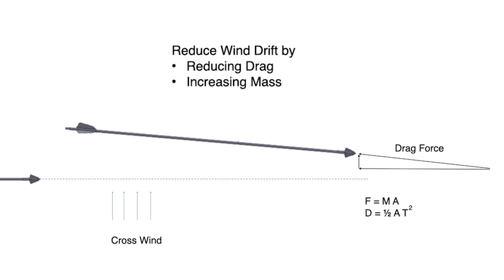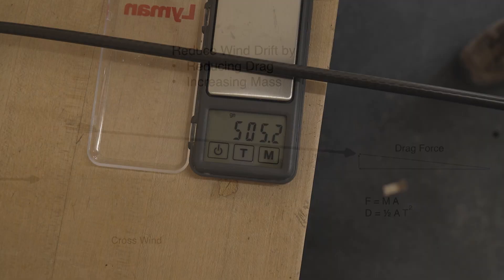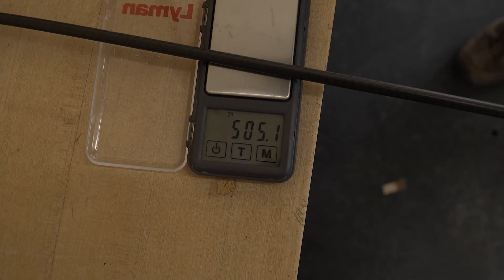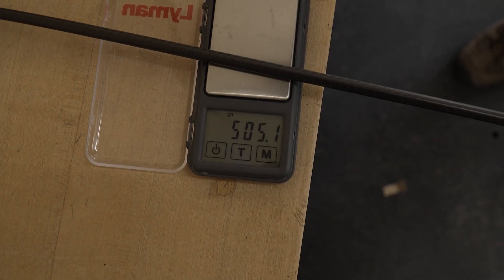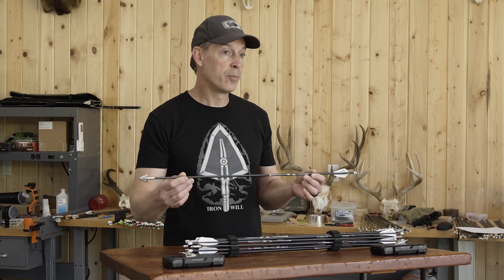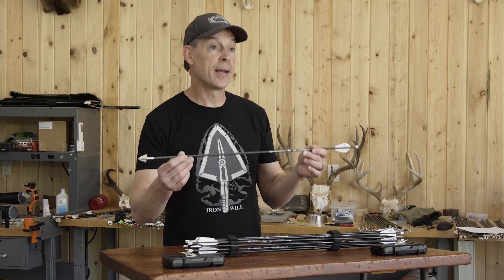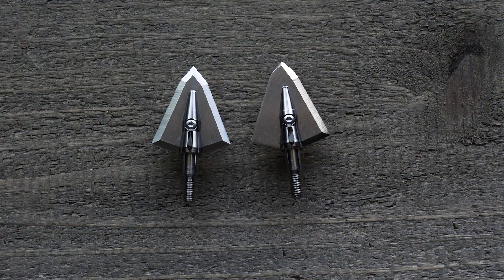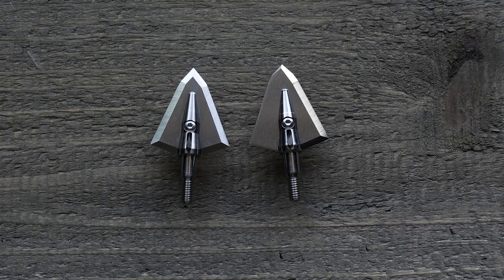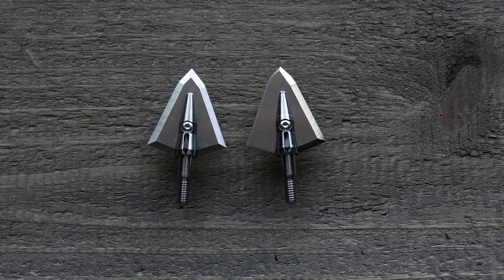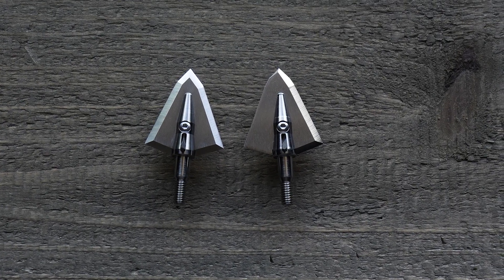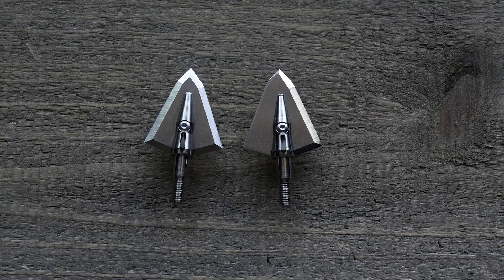By increasing mass — force equals mass times acceleration — if you increase the mass of your arrow, that sideways force component is just going to push your arrow less to the side as it moves downrange. Increasing mass will reduce wind drift, but it will also affect trajectory, so keep that in mind. You can also shoot a smaller broadhead, which will have less drag.